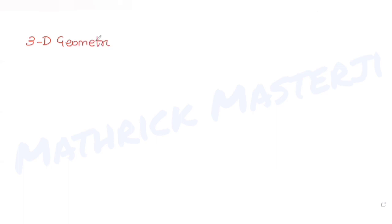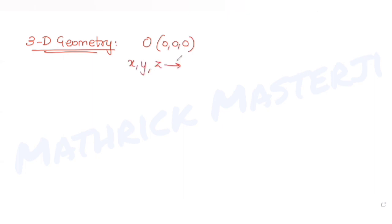Hi guys, I hope you are all doing well. Today's question is from the topic of 3D geometry. The question tells us that one vertex of a rectangular parallelepiped is at the origin, and the length of its edges along the x, y, and z axes are 3, 4, and 5 units respectively.